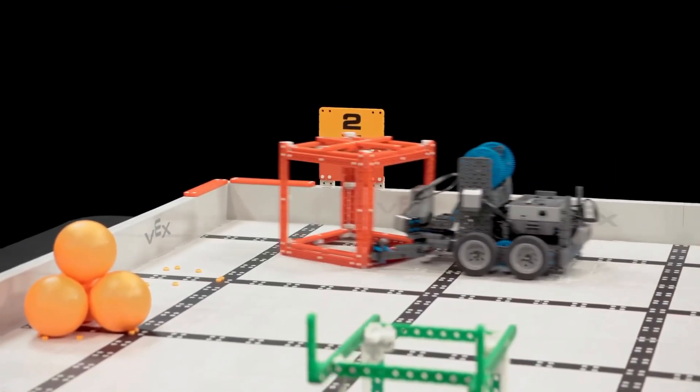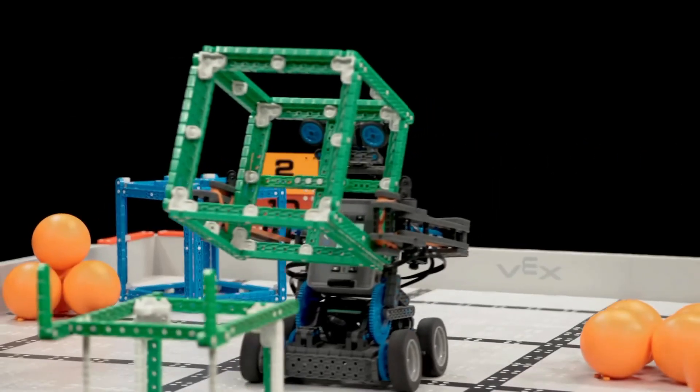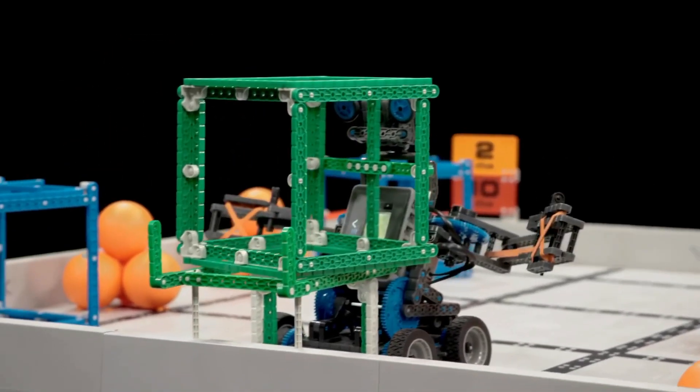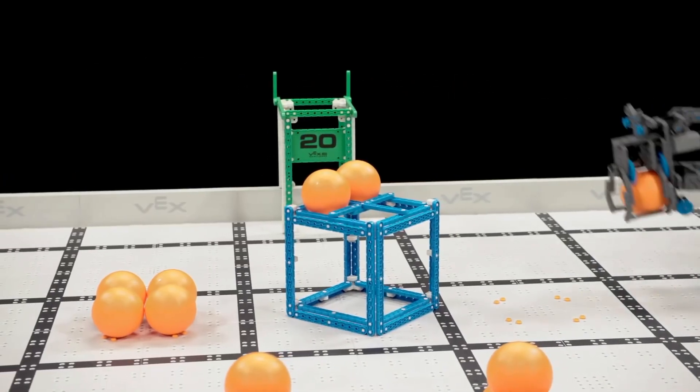A red or blue cube scored in the same color scoring zone is worth 10 points. And a green cube scored on a platform is worth 20 points. Cubes and balls are scored independently of each other.